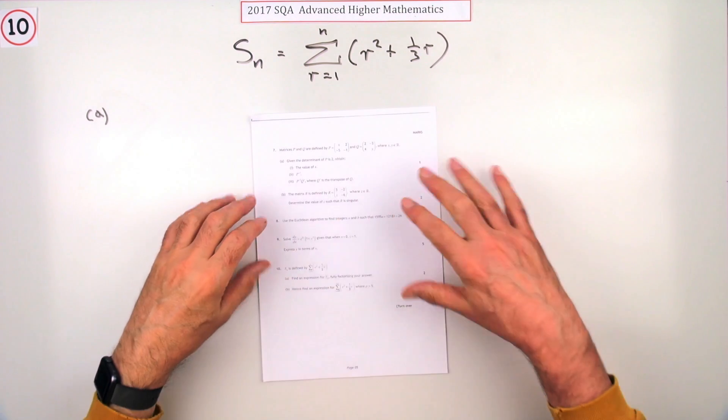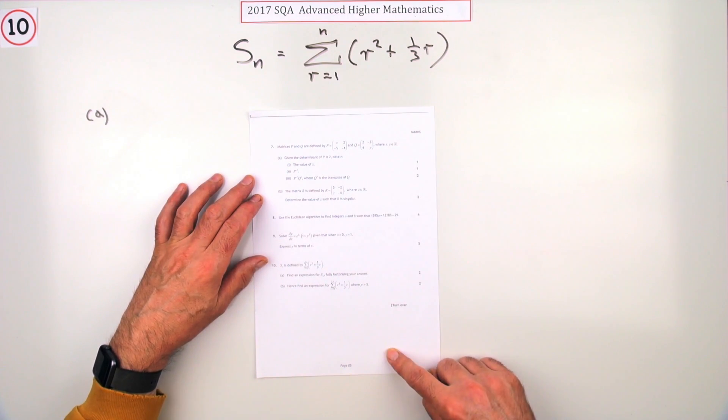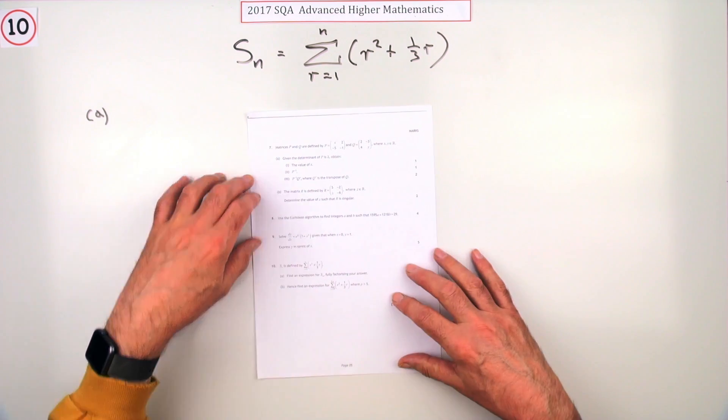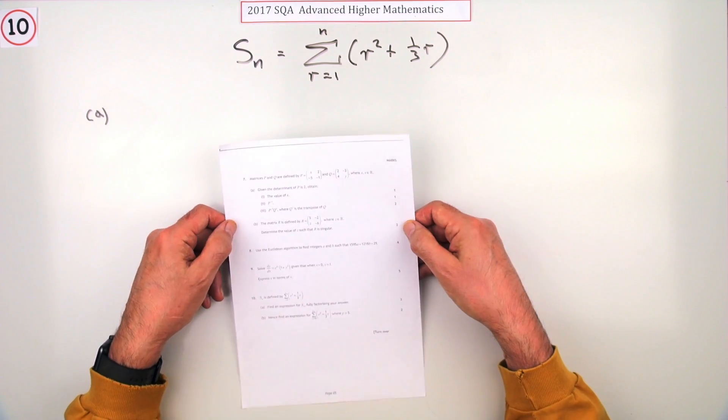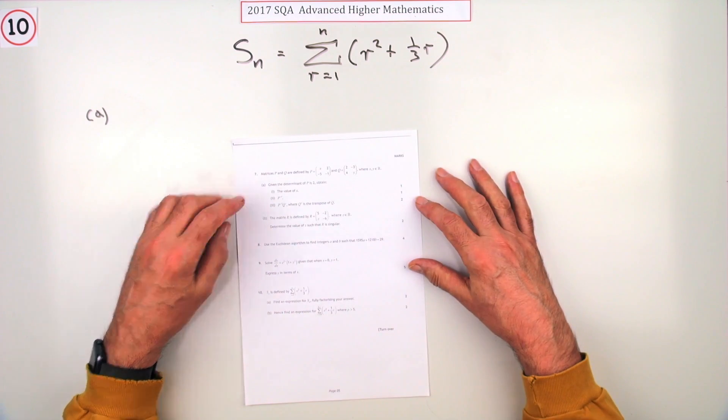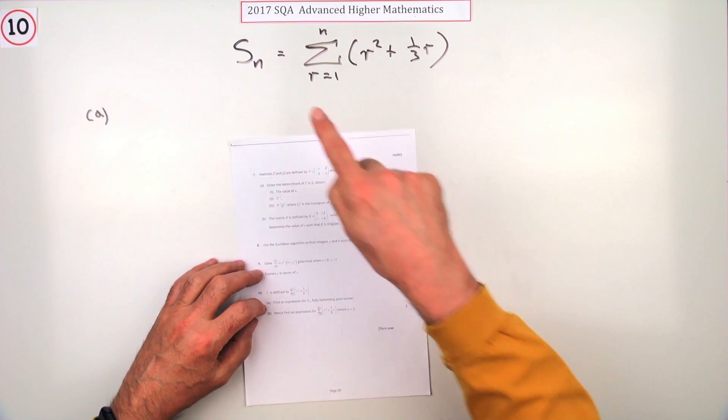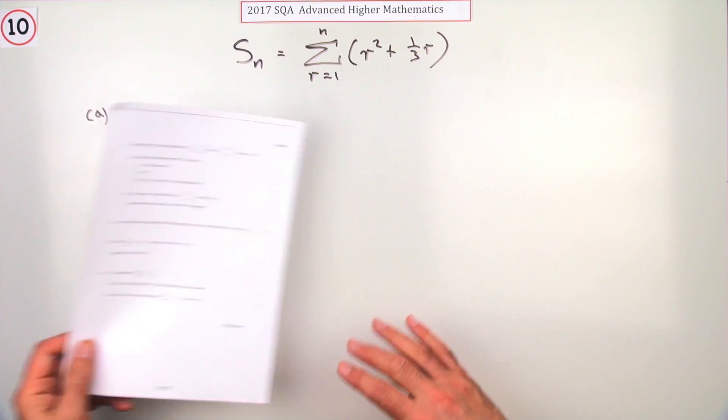Number 10 from the 2017 Advanced Higher paper, end of page two, still not quite at the halfway mark markwise. That's about 47 marks so far. Number 10, we've got this summation formula here, and there's only four marks for this. The first part says find an expression for this, fully factorizing your answer.